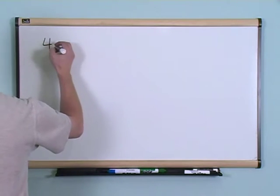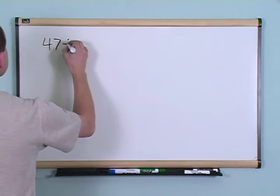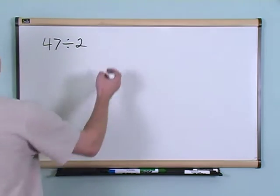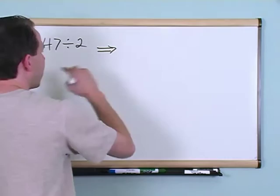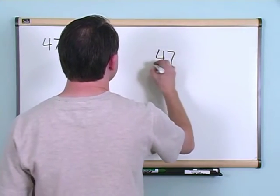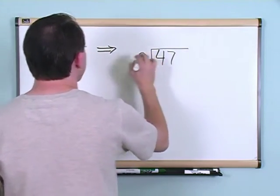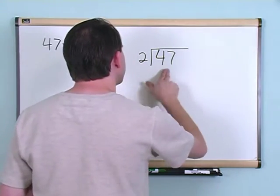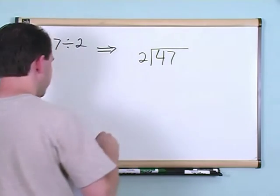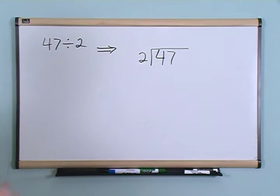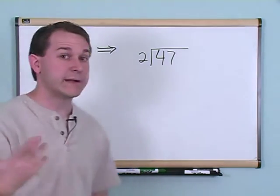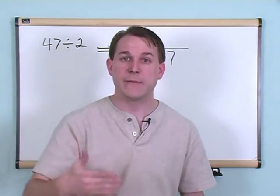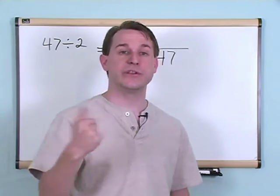What if you have 47 divided by 2? Well, the first thing you do is you rewrite this problem and you put 47 underneath the house and 2 on the outside, just like this. Now what you're doing is you're trying to divide 2 into 47, and the way you do this when you look at a problem, certainly I don't know off the top of my head how many times 2 is going to go into 47, so I'm going to show you the method that you use to go ahead and do this.